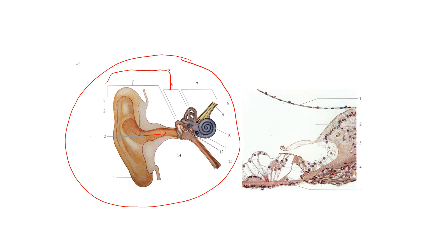In the middle ear, the middle ear consists of basically these bones: the hammer, anvil, and stirrup — the malleus, incus, and stapes.